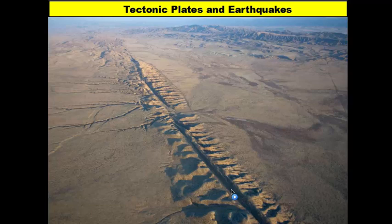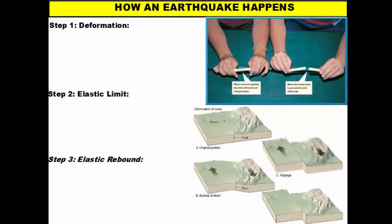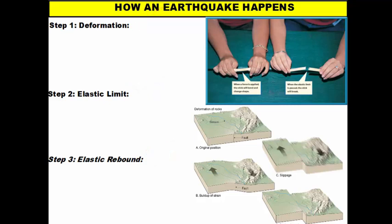Let's take a look at the mechanics behind how an actual earthquake happens. When looking at how an earthquake happens, there are three things you need to know: deformation, elastic limit, and elastic rebound. We'll use the popsicle stick example in the upper right-hand corner to discuss how an earthquake works.